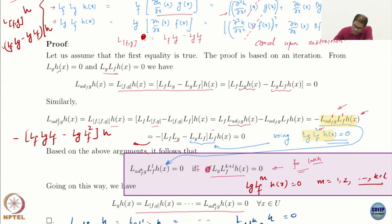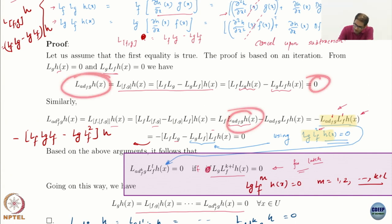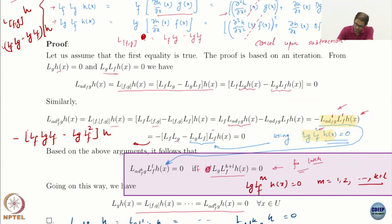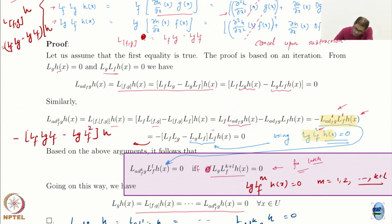We know that L_{ad_f g} h = 0, which we already proved. And Lg h = 0. So this first term goes away. Of course Lf h is not 0; rather Lg(Lf h) = 0 by the relative degree assumption. So what remains is the second term: L_{ad_f g}(Lf h).